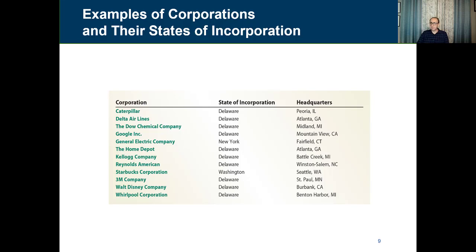Here we have a sample of publicly traded companies, including Caterpillar, Delta Airlines, the Dow Chemical Company, Google, General Electric, Home Depot, and Kellogg. You can see that most of these companies, even though their headquarters are in different states, are incorporated in Delaware — with the exception of GE, which is incorporated in New York, and Starbucks, which is incorporated in Washington, the same state as its headquarters.